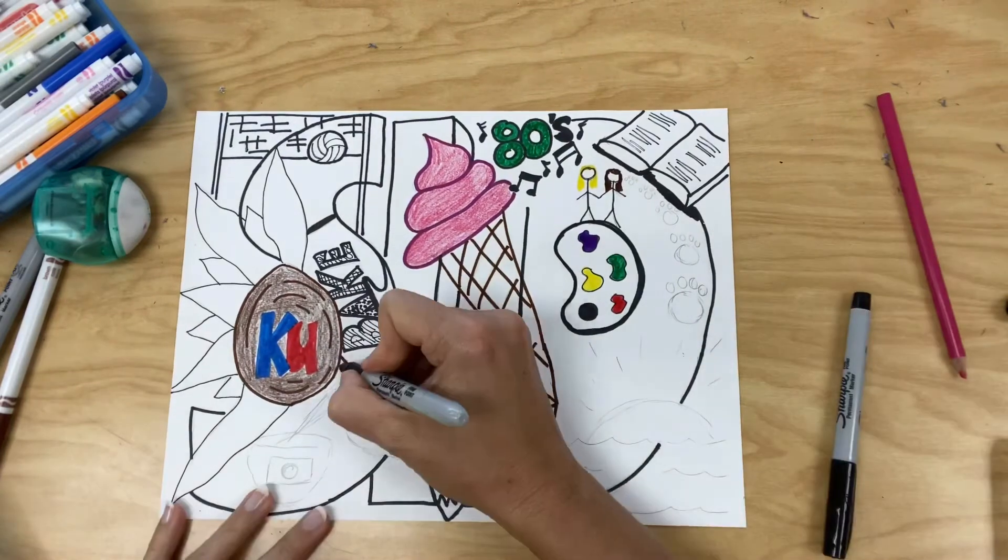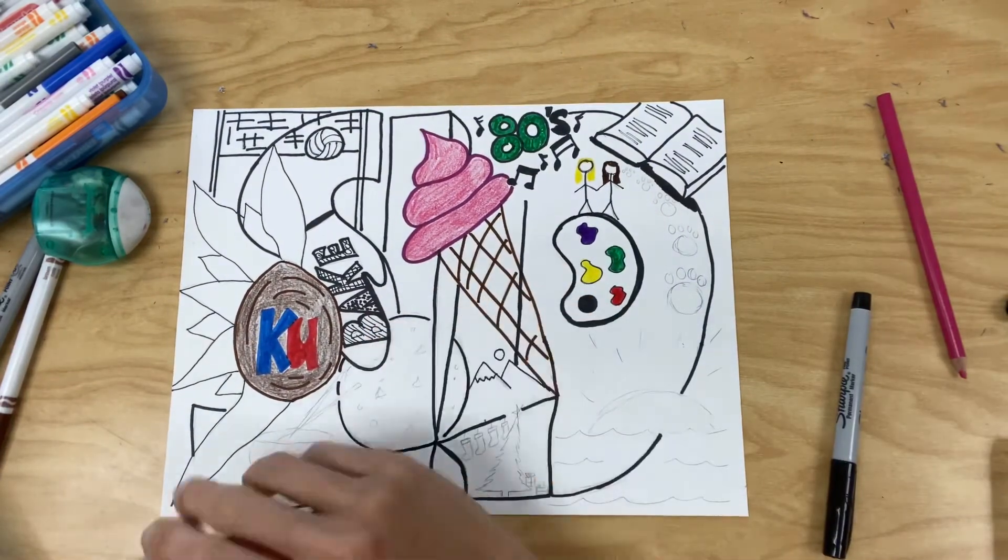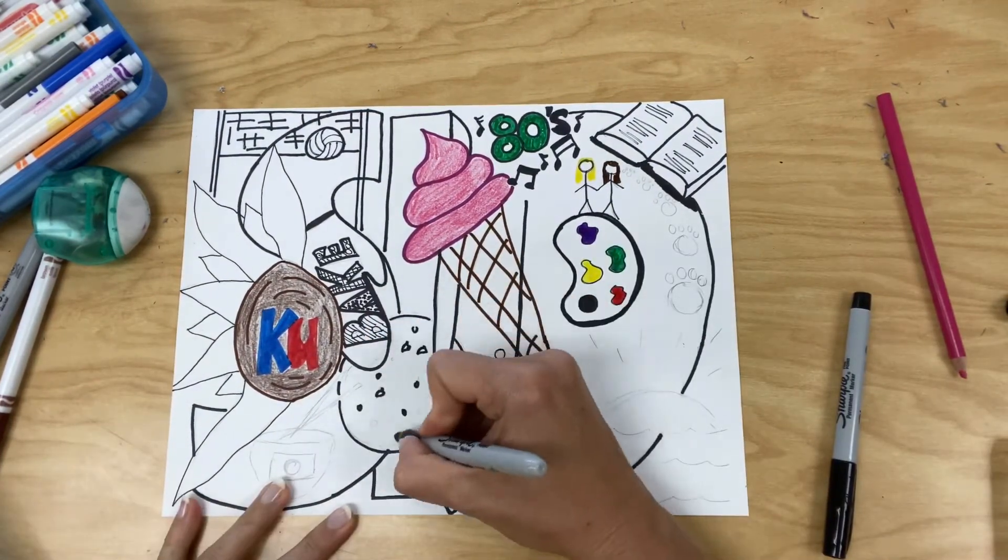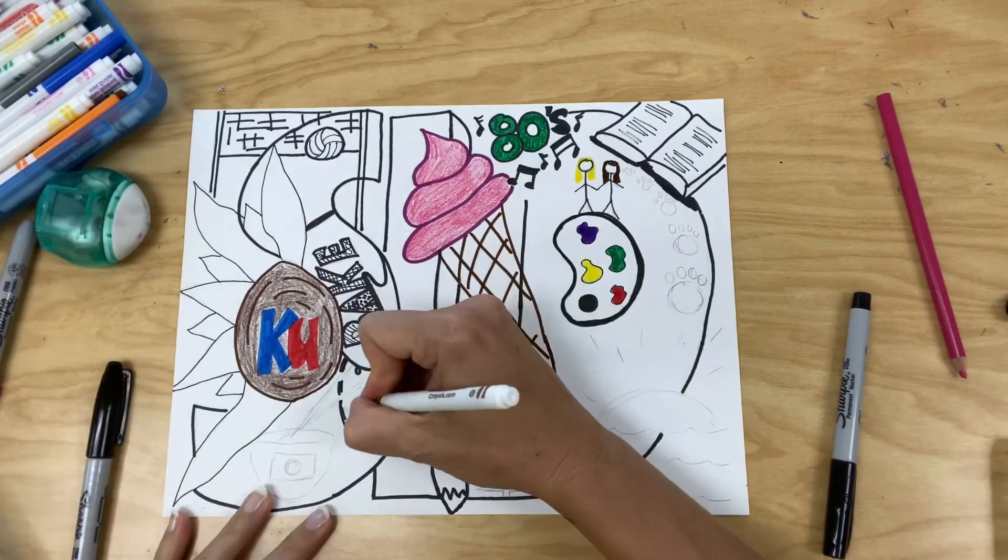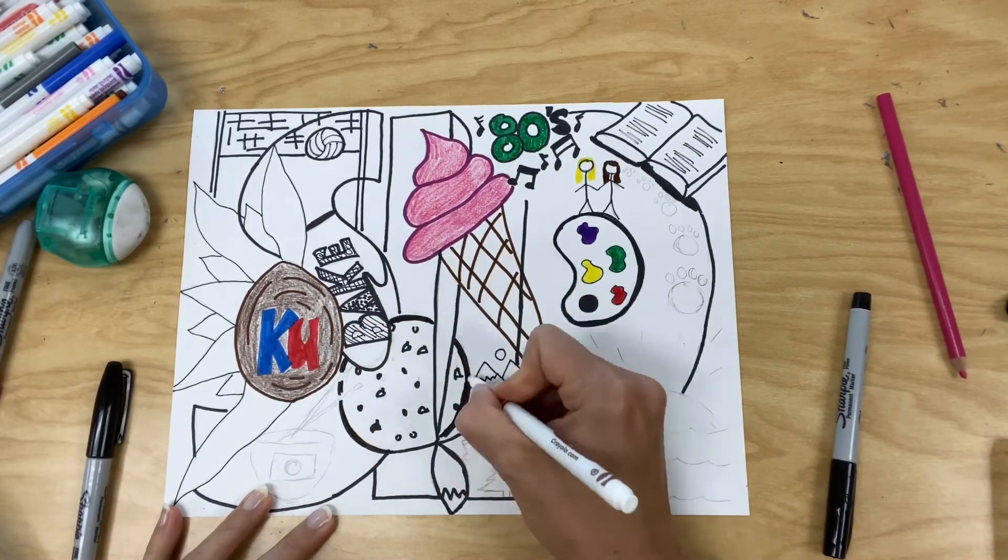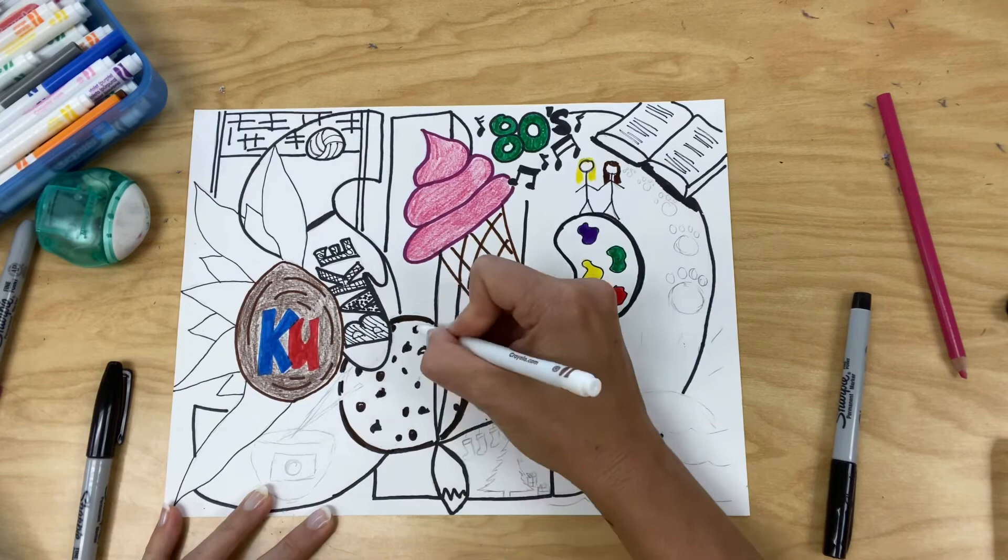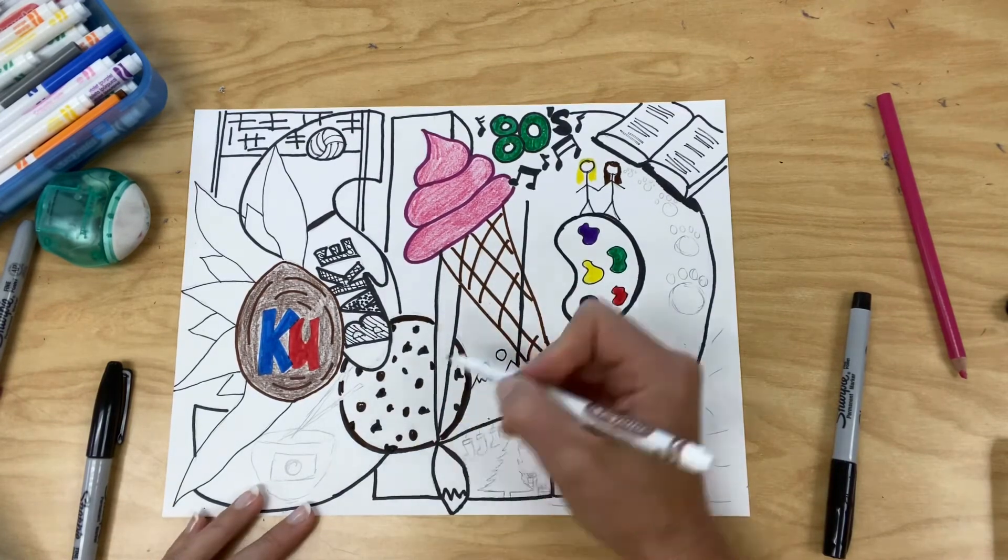To check out the grading criteria for this project, go to the seventh and eighth grade art Google classroom under lesson one. In the Google slide you will find the grading criteria.